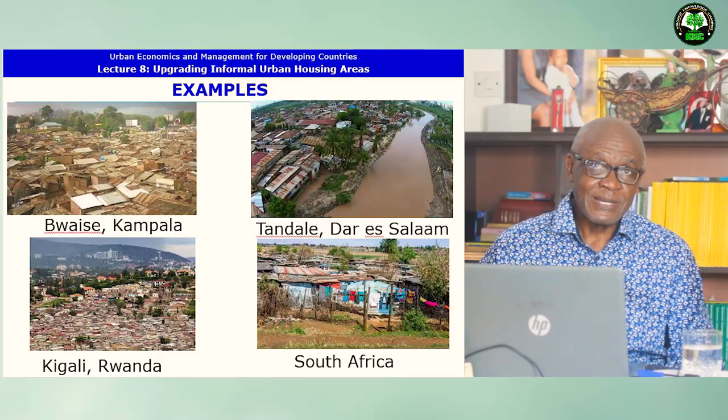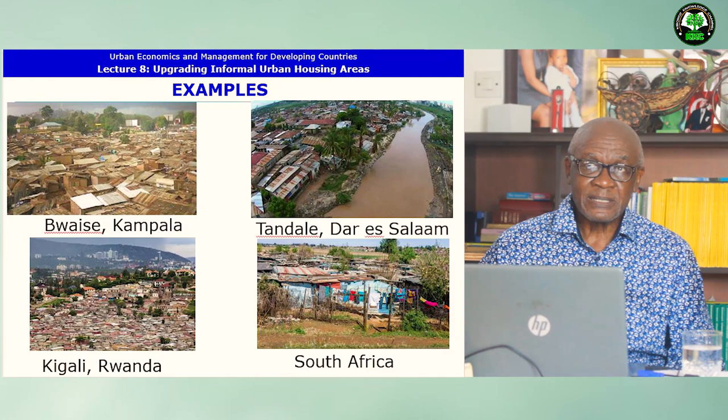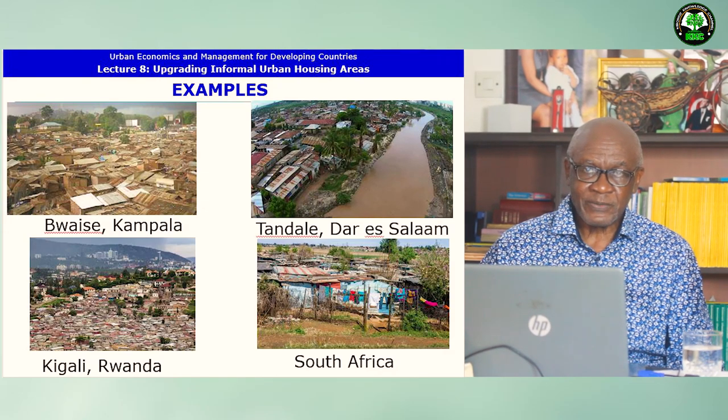Here you can see some examples of the way informal settlements look in Ibuayis, Kampala; in Tandale, Dar es Salaam; in South Africa; and in Kigali, Rwanda.